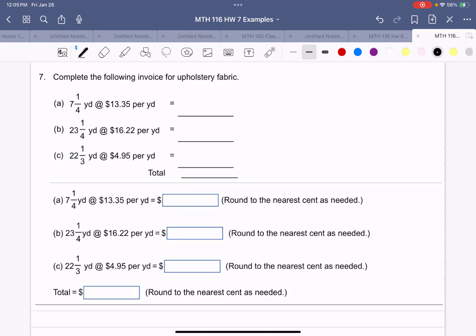So you can just use your calculator and the fraction key to do this. So 7 1/4 times $13.35 gives us $96, and I'm going to need to round, so the nearest cent is $96.79.